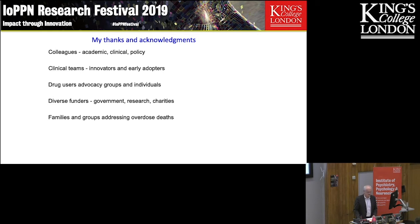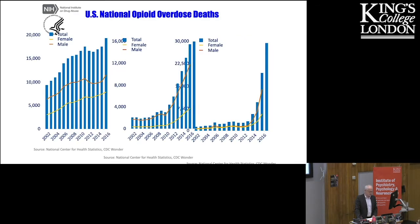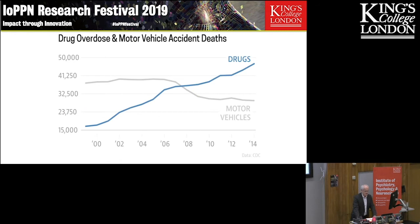A particularly dire situation currently exists in the US, where there are three overlapping epidemics. Firstly, deaths from prescription opioids, tripling over the last 15 years, followed by a more recent, steeper-onset epidemic of heroin overdose deaths over the last five years, and now further complicated by a rapid increase in deaths from illicitly manufactured fentanyl and its analogues. To get this in perspective, opioid overdose deaths now exceed deaths from road traffic accidents.